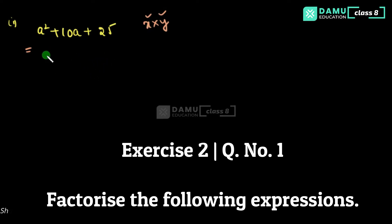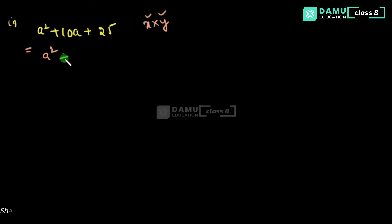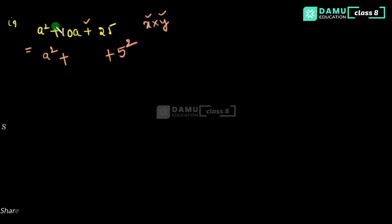a squared we can write as a squared only, plus 10a — keep that for a moment. 25 is a perfect square, so we write it as 5 squared. In the given expression, since both signs are plus, this is definitely the (a + b) whole square formula. Two pluses means (a + b) whole square.